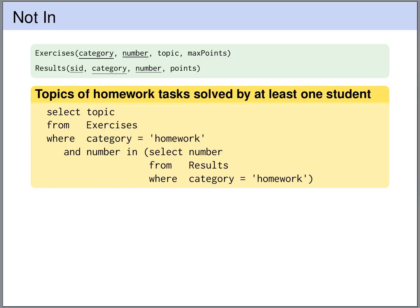On the slides we have a slightly different solution. Here in the subquery we restrict to the homework results. If we restrict to the homework results, the homework is uniquely identified by its number. So we only need a single column — number — and in the outer query we also restrict to homework results, then we simply check whether the number of this homework appears in the subquery. The result will be the same.